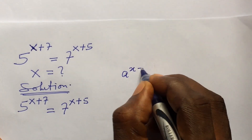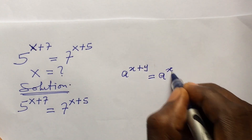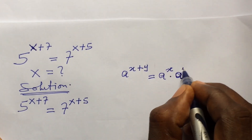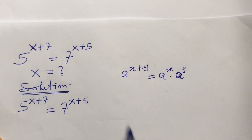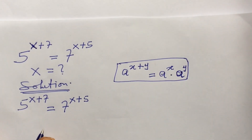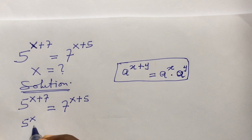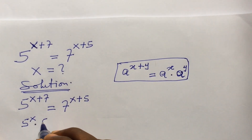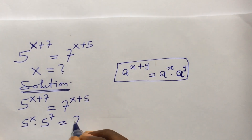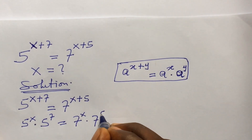According to the law of indices, if you have a to the power of x plus y, this is the same as a to the power of x times a to the power of y. So applying this rule, our equation becomes: 5 to the power of x times 5 to the power of 7, equal to 7 to the power of x times 7 to the power of 5.